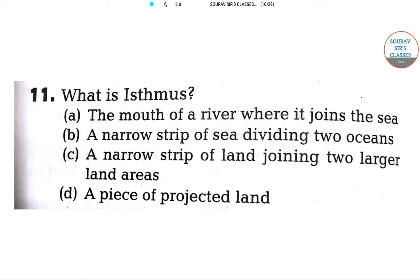In this question, the answer is option C. That means a narrow strip of land joining two larger land areas. Isthmus is basically a narrow strip of land which joins two large landmarks. It separates two large water bodies as well.